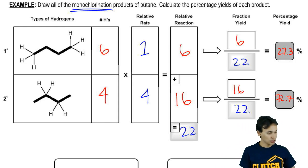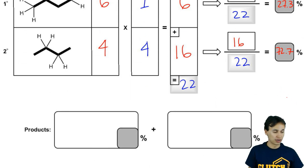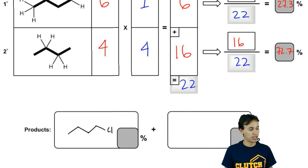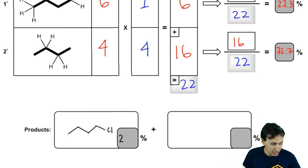Okay, that looks good. So now I draw my products out and what you can see is that for my primary product where I get a chlorine here, I'm going to get 27.3% of that one. And then for my secondary where I put my chlorine here, I'm going to get 72.7% of that.